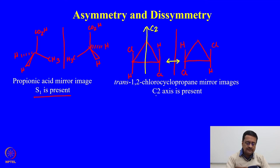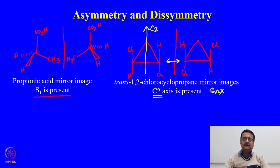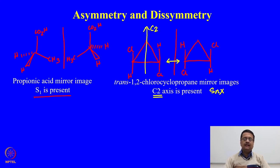Here we have the presence of a C2 axis, but we do not have Sn. This is the condition for a disymmetric molecule: it will not have Sn, but it can have any other proper axis of symmetry like C2.